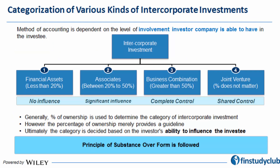On this slide, I'm bifurcating all types of inter-corporate investments into four watertight buckets. These buckets are not primarily about percentages, although I have mentioned them. The key principle here is substance over form. I'm noting 'substance' and 'legal form' to explain what each of the four categories means.